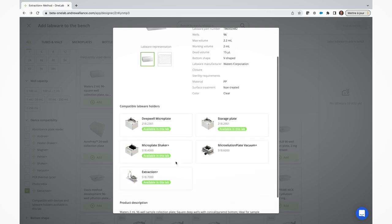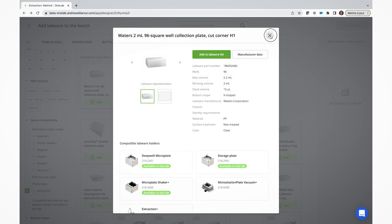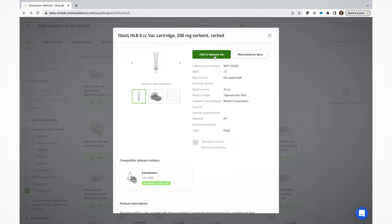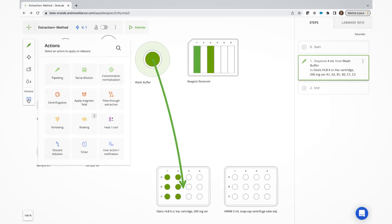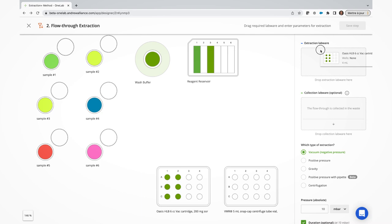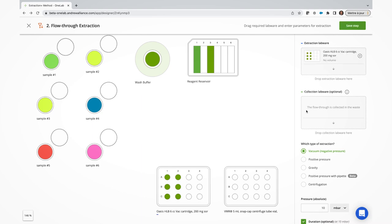Any consumable chosen from this filtered list will then automatically trigger the use of the device during the method execution phase. It's that simple. Next, click on the Actions button on the left panel. Select flow-through extraction from the list, drag and drop the consumable or consumables you want to apply the action to.